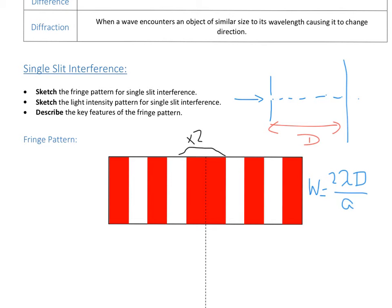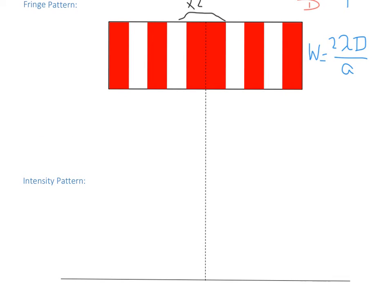Let's look at what this looks like more mathematically — the intensity pattern. If we map the intensity of light arriving at each spot, you get a large central peak that is double the width of the subsequent peaks. You'll notice a decreasing height of the peaks the further out you go, indicating the brightness is decreasing. The central fringe is considerably brighter than those on either side.